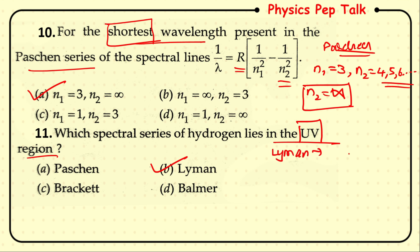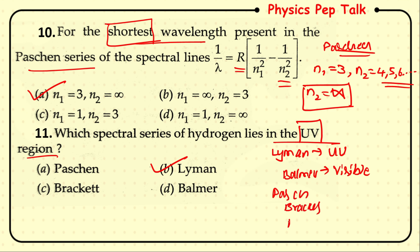To summarize: the Lyman series lies in the UV region, the Balmer series lies in the visible region, and the Paschen, Brackett, and Pfund series lie in the infrared (IR) region.